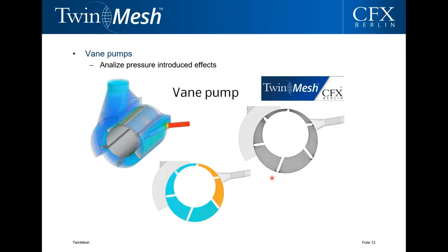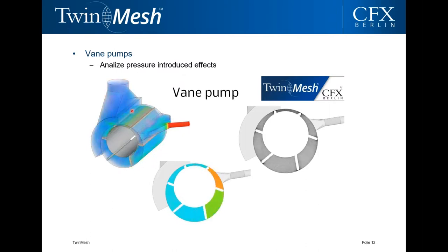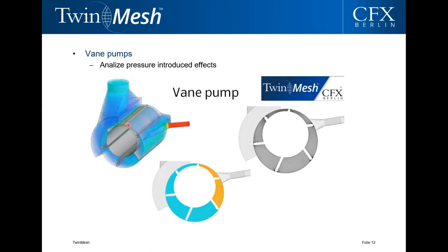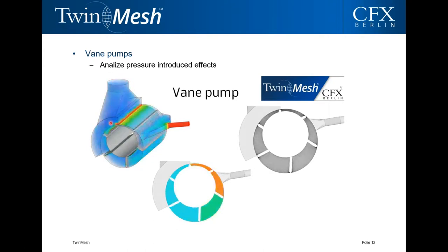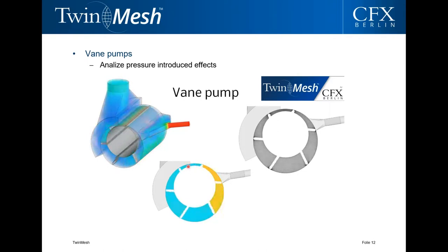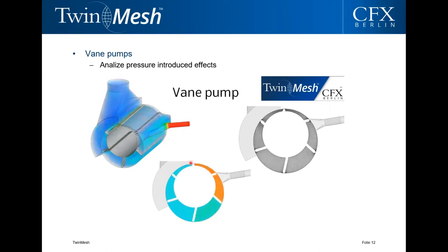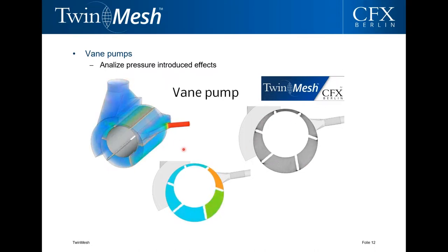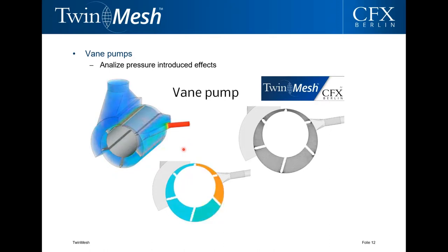Here we see a simulation of a vane pump where pressure-induced effects are visible. As a chamber connects to the pressure port, gas is ejected at high velocity due to over-compression. The center animation shows the corresponding pressure field exceeding a certain value before connecting to the ambient-pressure port. The right animation shows the grid, which could be the basis for an optimization task to eliminate the over-compression.